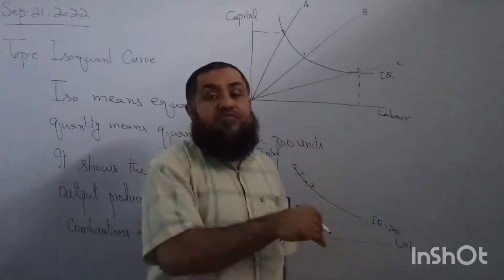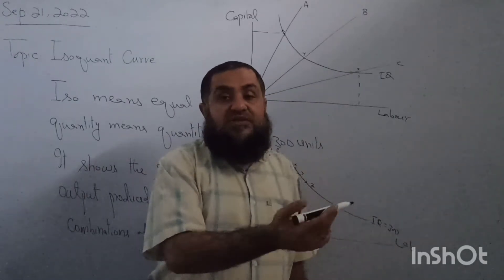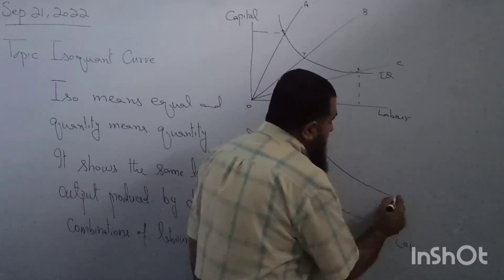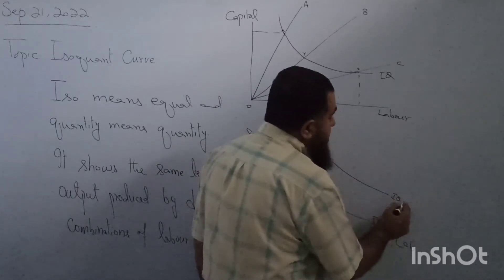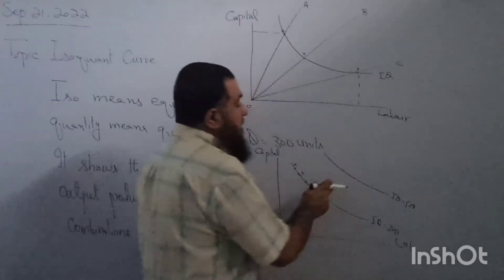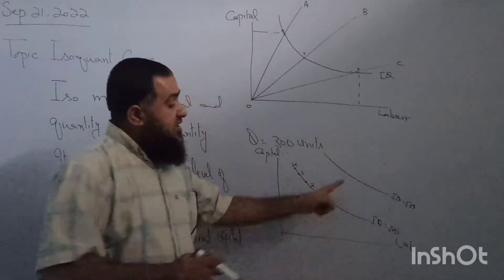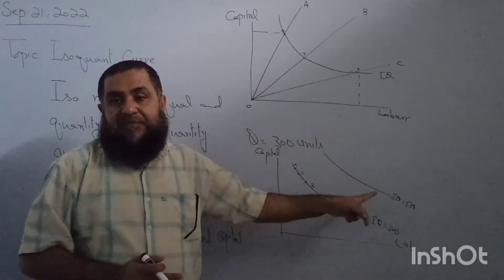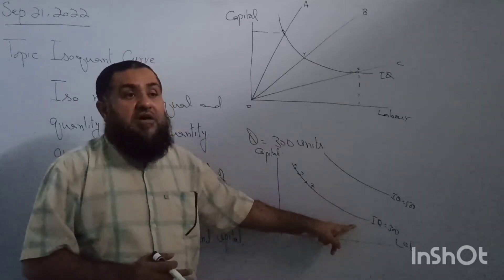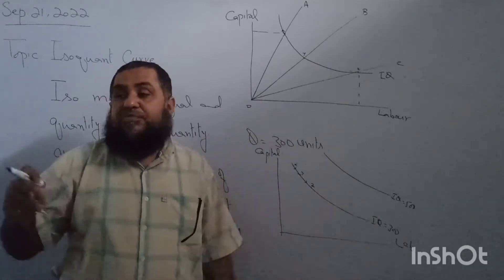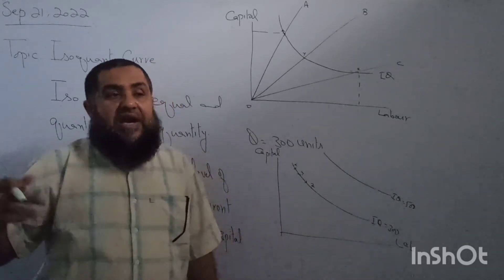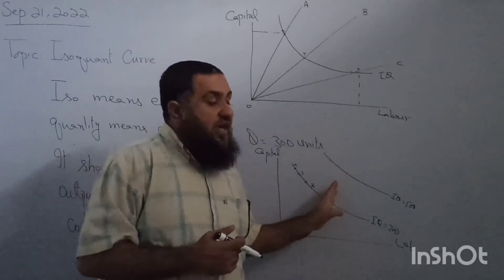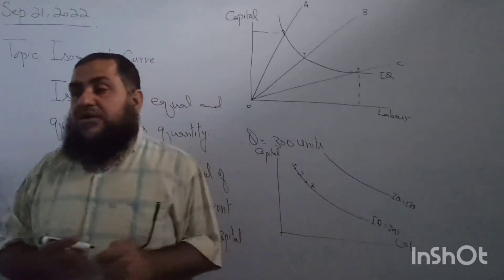If a firm wants to produce more output — more than 300 units, for example 500 units — the next isoquant will be higher than the previous one. Along this higher isoquant, the firm is able to produce 500 units. If it wants to produce even more output, it has to approach a still higher isoquant curve.